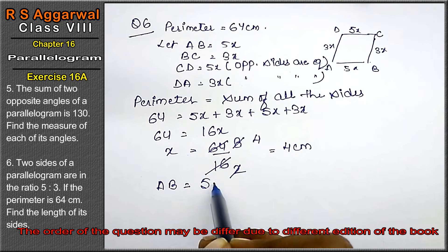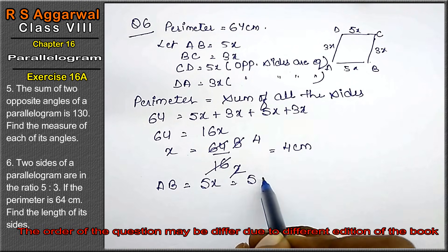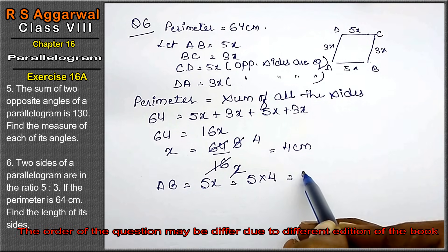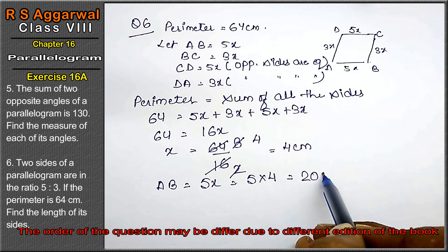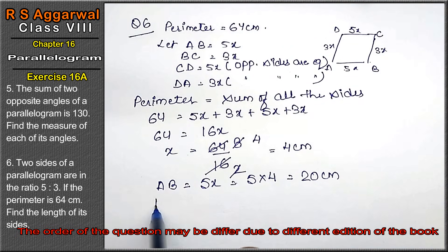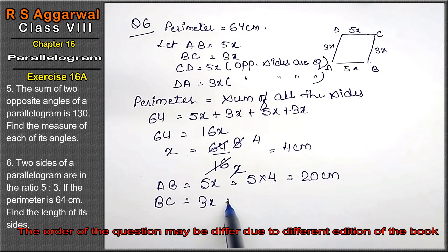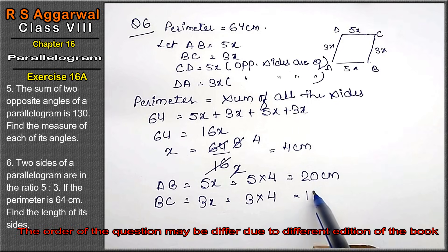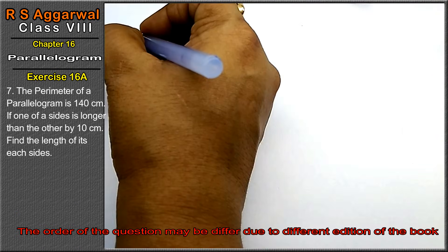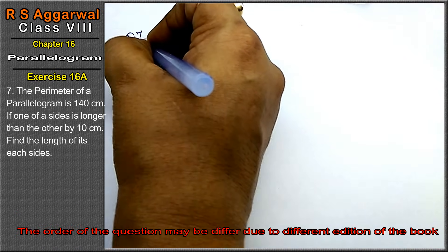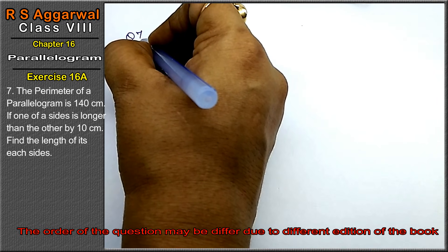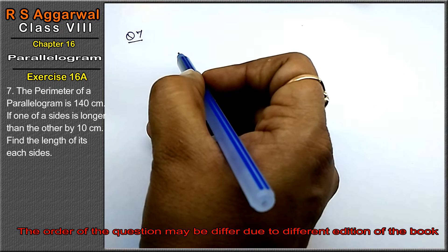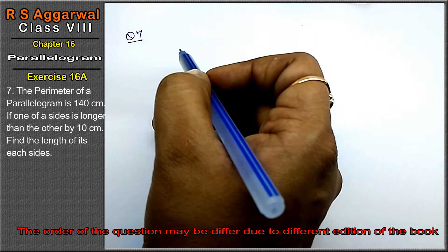AB is 5x, so AB equals 5 times 4, that is 20 cm. And BC was 3x, so BC equals 3 times 4, that is 12 cm. That is the answer.